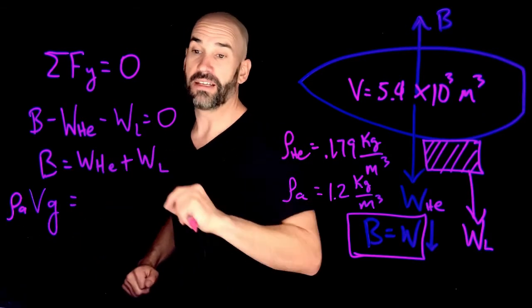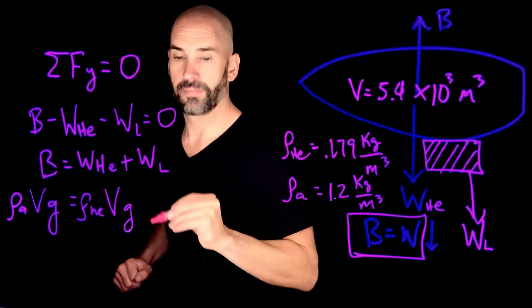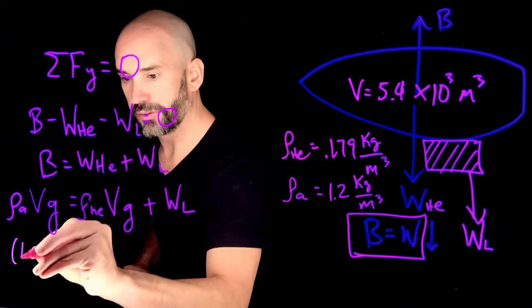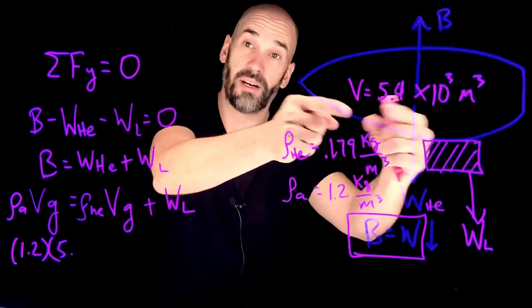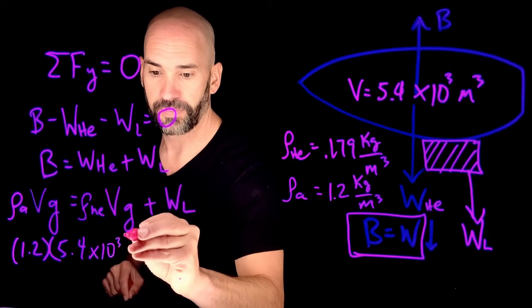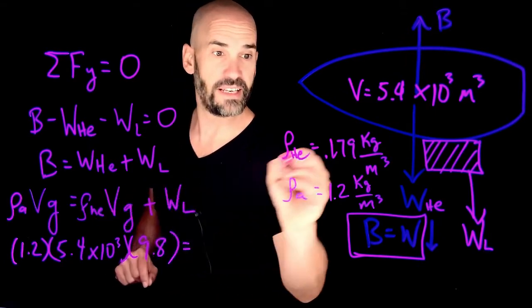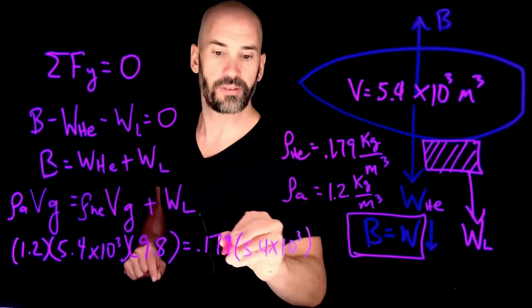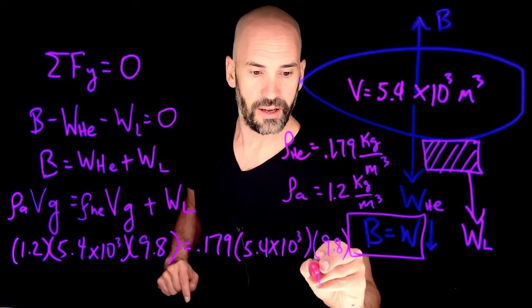So that has to equal the weight of the helium. Well, what's the weight of the helium? That's going to be the density of the helium times the volume that the helium takes up times gravity. And the weight of the load here is what we're solving for. So let's plug this in. The density of air is 1.2, the volume is 5.4, remember this is the whole volume of the helium is basically the volume of the Zeppelin. So that's going to be 5.4 times 10 to the 3 times 9.8. And we know that the density of the helium is 0.179 times also 5.4 times 10 to the 3. So the volume of the helium takes up is, again, the volume of the blimp, 0.179 times 9.8 plus the weight of the load.